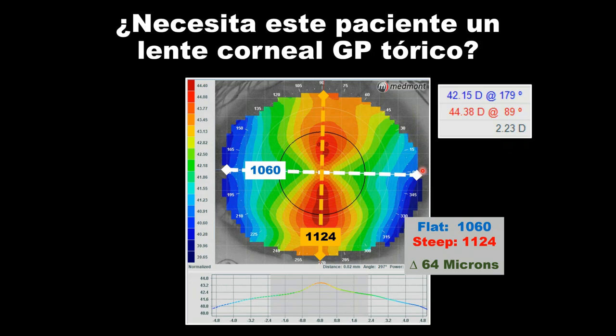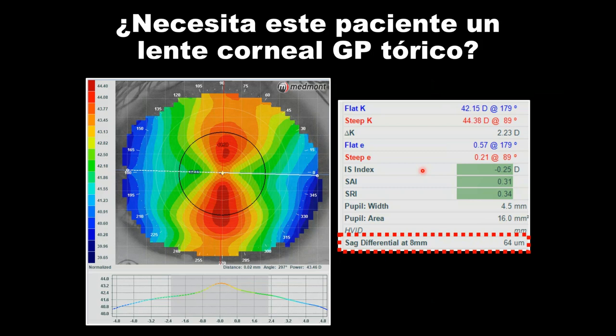If we look at sagittal depth and measure the height of the eye across the flat meridian and across the steep meridian, we can compare that difference in elevation between those two meridians. The Medmont is telling us there's 64 microns of difference between the height of the eye on the flat and the height along the steep. But is that a large number? Is that significant? One of the things Medmont does very efficiently is provide us that sagittal differential number on one of the main windows, helping us be efficient in our contact lens practice.